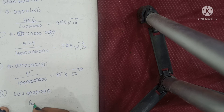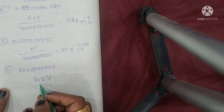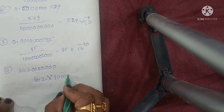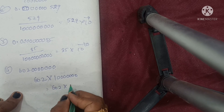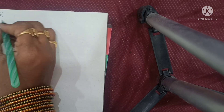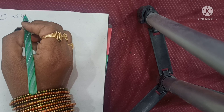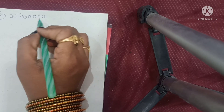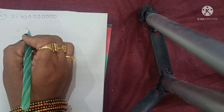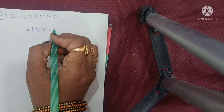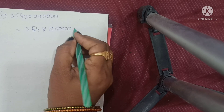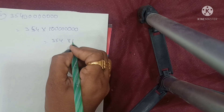Fourth one: 6,020,000,000,000,000,000. How to write: 6.02 — counting digits: 1, 2, 3, 4, 5, 6, 7 — so 6.02 into 10 to the power of 7. Fifth one: 35,412,000,000,000,000,000,000,000. Counting: 1 through 8 — so 3.454 into 10 to the power of 8.